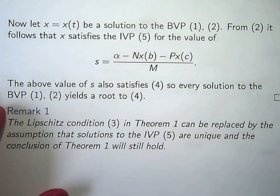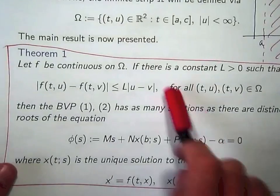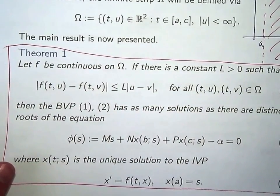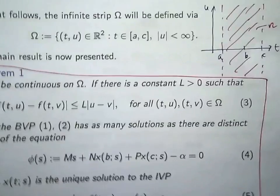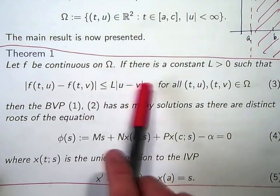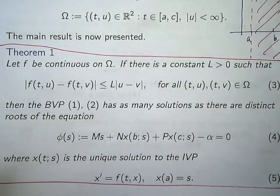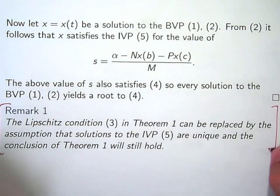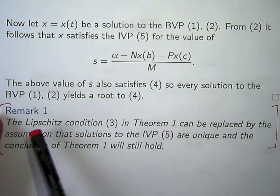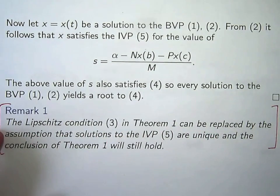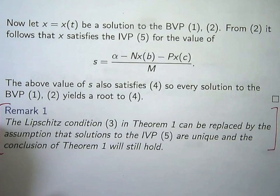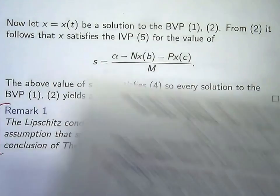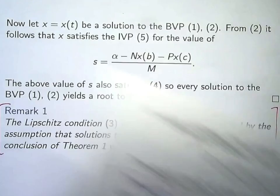And you might think, what about the main theorem? Can I simplify here, or extend it, or what sort of room have I got to move on this theorem? Well, the significance of this assumption and the continuity is to yield the uniqueness to the initial value problem. There are lots of other assumptions that you can make to yield uniqueness to the associated initial value problem. So in this remark, what I've done is just presented a general concept here. The Lipschitz condition 3 in theorem 1 can be replaced by the assumption that solutions to the IVP 5 are unique. These are more abstract assumptions, but if you assume that then the conclusion of theorem 1 will still hold.